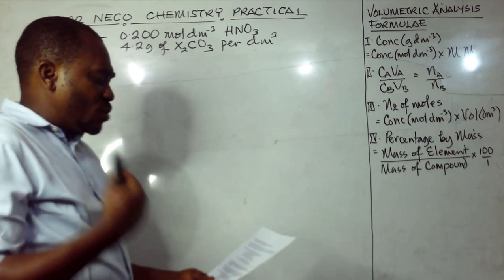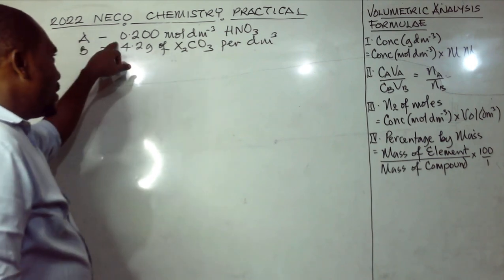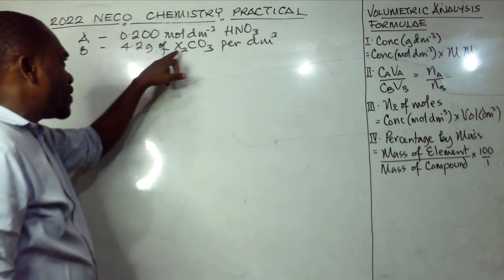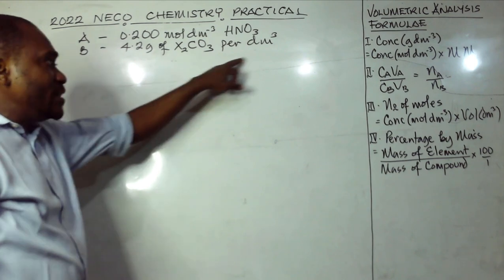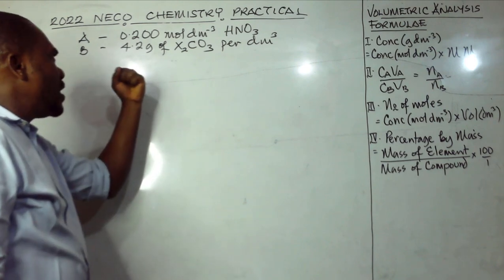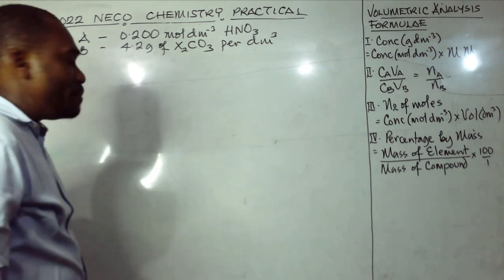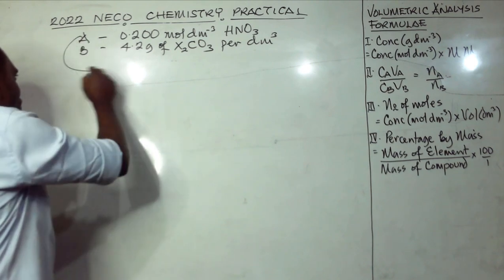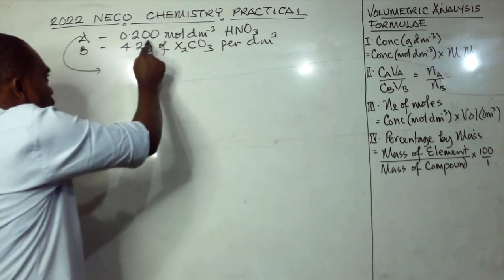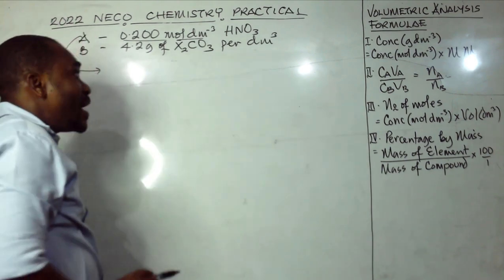We are asked to calculate the concentration of B in mol/dm³. A is given as 0.200 mol/dm³ of HNO3, and B is 4.2 grams of X₂CO₃ per dm³. From this information, we have the concentration in mol/dm³ of A, and that's the only thing we have about A along with its formula, from which we can calculate the molar mass of A.